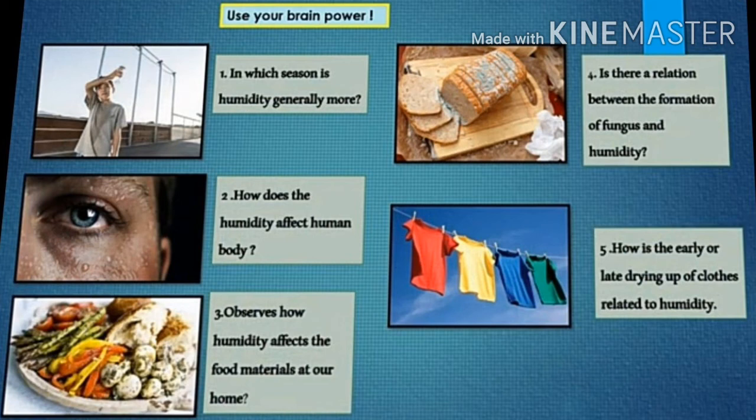How is the early or late drying up of clothes related to humidity? In summer, humidity is high because the temperature is high, so the air cannot absorb more moisture from wet clothes, thus taking longer to dry them. Students, here we stop today, and in the next period we will learn about relative humidity.